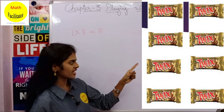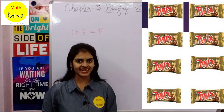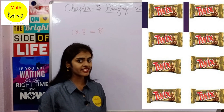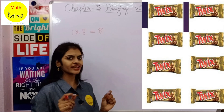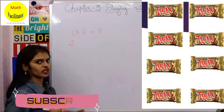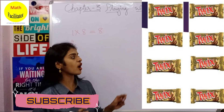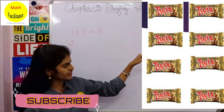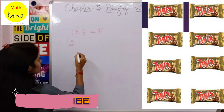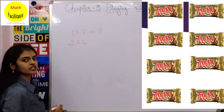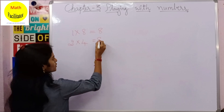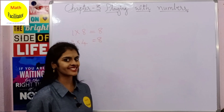In the second arrangement, we have arranged 2 chocolates in each row. So we have taken 2 chocolates per row. How many rows? 1, 2, 3 and 4 — totally 4 rows. So 2 fours are 8, giving a total of 8 chocolates.